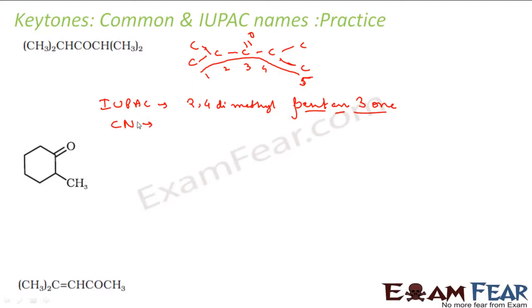Let me add the common name. The common name will be what? If you see, this is isopropyl. So it is diisopropyl ketone. As I told, to write the common name, what we do is write the name of the alkyl-aryl groups, this one and this one, and then I use the word ketone. In this case, I have two isopropyl groups, so it is diisopropyl ketone.